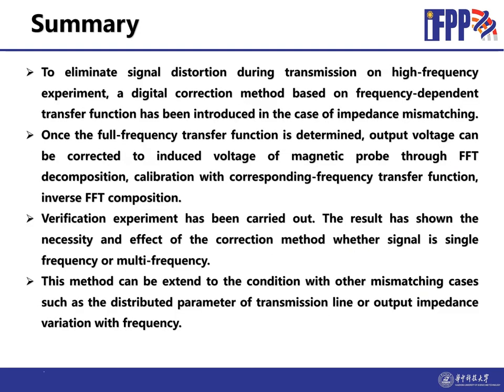The summary. To eliminate signal distortion during transmission in high-frequency experiments, a digital correction method based on frequency-dependent transfer function has been introduced in the case of impedance mismatching. Once the full-frequency transfer function is determined, the output voltage can be corrected to the induced voltage of magnetic probe through this process. The verification experiment has been carried out. The result shows the necessity and the effect of the correction method, whether the signal is single-frequency or multi-frequency. The method can be extended to the conditions with other mismatching cases such as distributed parameters of the cable or the output impedance variation with frequency. Thank you.